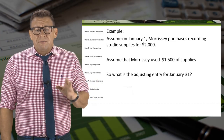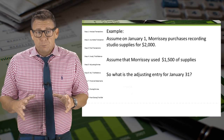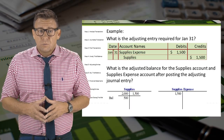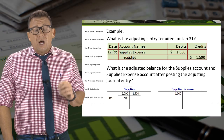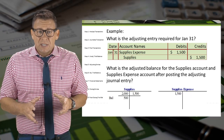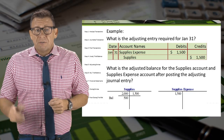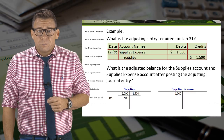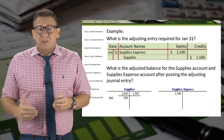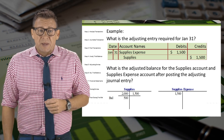Assume that $1,500 of supplies were used up during the month. The adjusting entry on January 31 is a debit to the expense account supplies expense and a credit to the asset account supplies for $1,500. At the end of the month, Morrissey has used up $1,500 of a supplies asset. When we use up assets, we create expense.